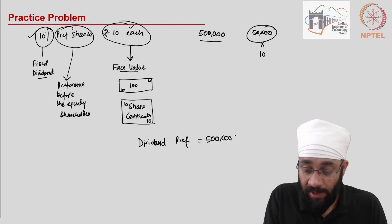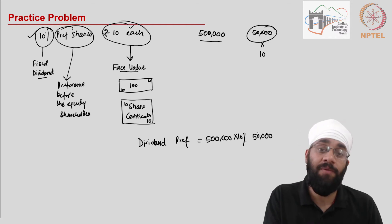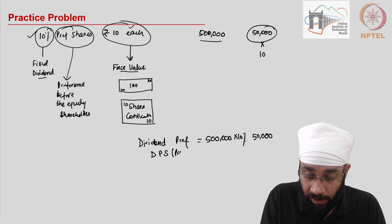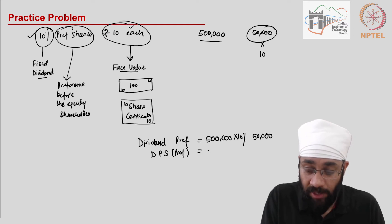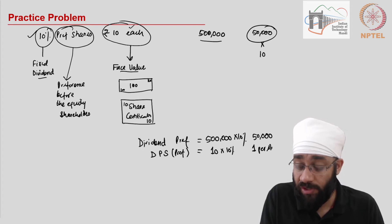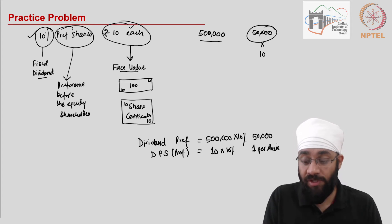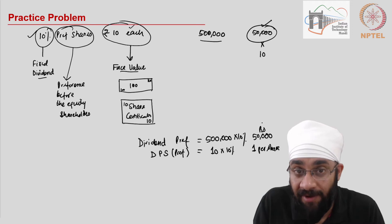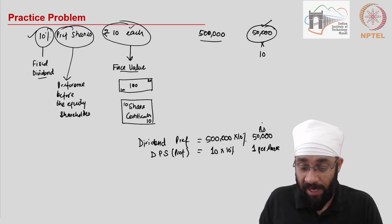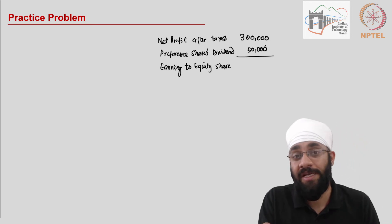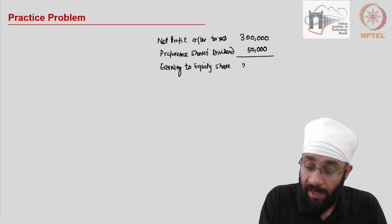Since preference shares have a dividend of 10%, the dividend on preference shares equals 5,00,000 multiplied by 10%, which is 50,000 rupees. The dividend per share is rupees 10 multiplied by 10% = rupee 1 per share. So the total preference dividend is 50,000 rupees, leaving 2,50,000 as earnings available to equity shareholders.